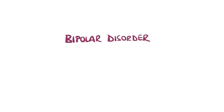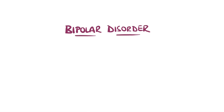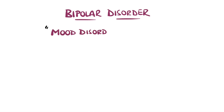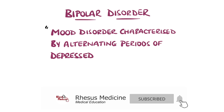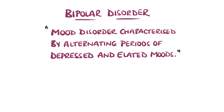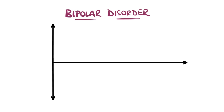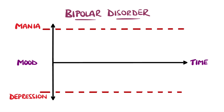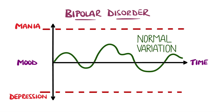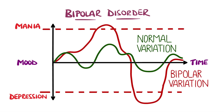Bipolar disorder is a mood disorder characterized by alternating periods of depressive symptoms and elevated mood, termed either hypomania or mania. Most people experience normal ups and downs, but in bipolar disorder, the range of moods is greater than normal and features extremes.